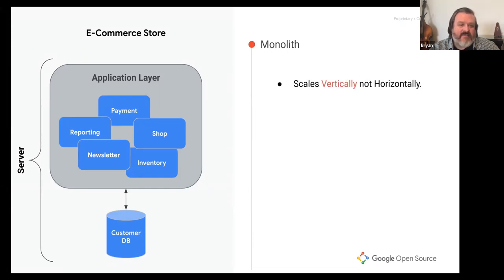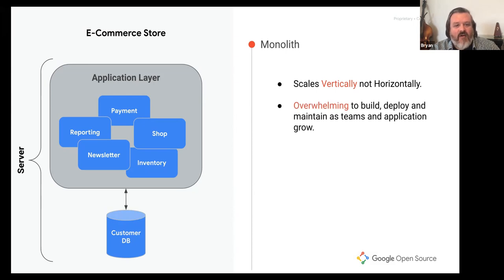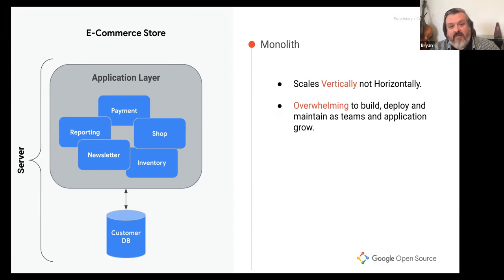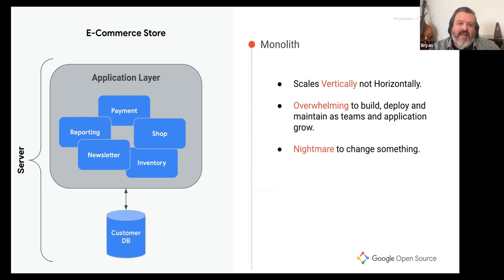There are some inherent issues with this pattern. Most notably, it can scale in only one direction — vertically. You can create bigger machines, but you can't scale out individual components. It can also be very overwhelming to build, deploy, and maintain as the application grows. Adding more features, functionality, and teams can become unwieldy. This makes deployment, management, and coordination very difficult over time, and any change one team makes could affect the whole system.